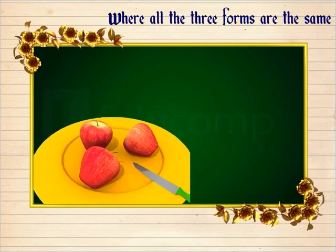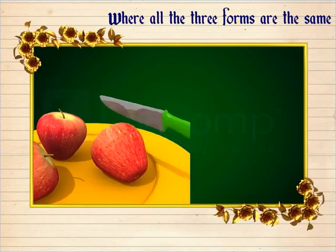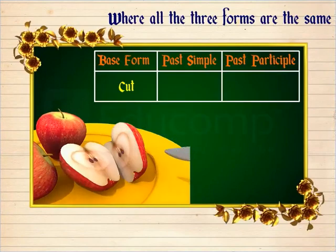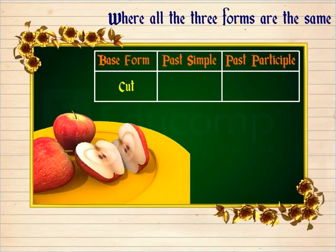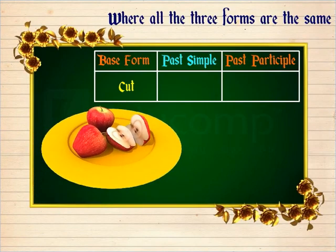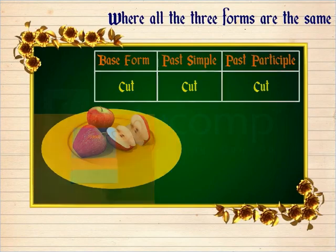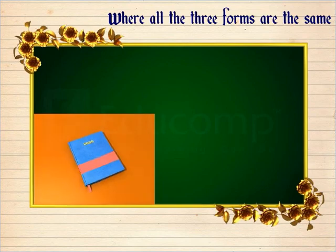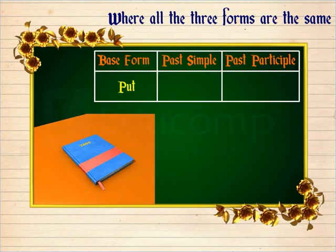Where all the three forms are the same: the verb 'cut' is one example. Its base form, past simple, and past participle forms are all 'cut.' Another example is the verb 'put.' Its base form, past simple, and past participle forms are all 'put.'